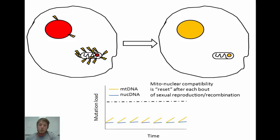With sexual reproduction and recombination, mitonuclear compatibility is reset after each bout of reproduction. This is the core of our hypothesis. We say that the evolution of sex was in response to a need for the nucleus to compensate for the accumulation of mutations in the mitochondria.